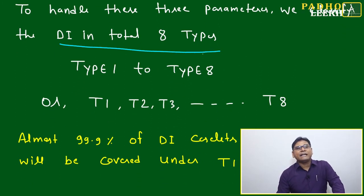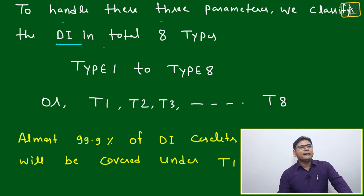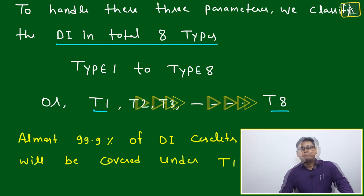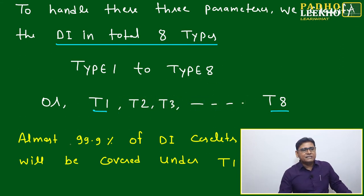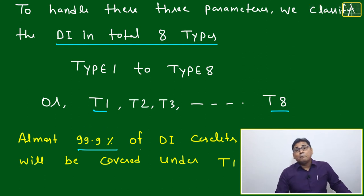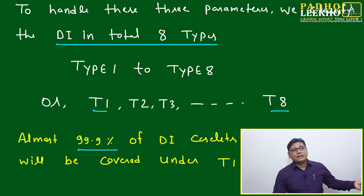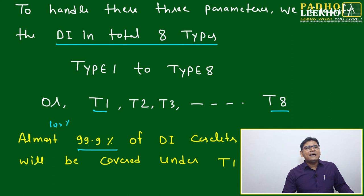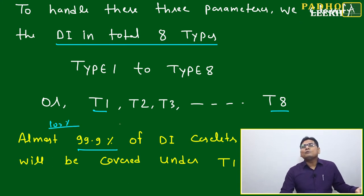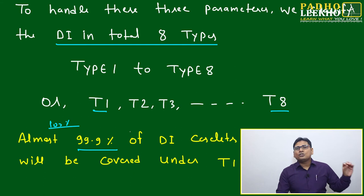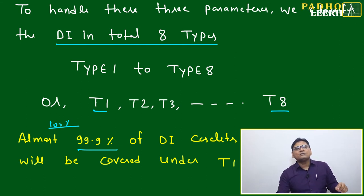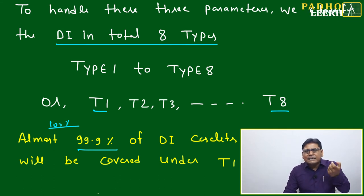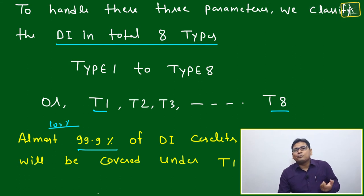Based on these three parameters, we will divide DI into a total of eight types — Type 1 through Type 8. Almost 99.9% — practically 100% — of all DI caselets you encounter will fall into one of these eight categories. Once you can categorize a caselet just by reading two to three lines, your brain will immediately recognize which type it is.